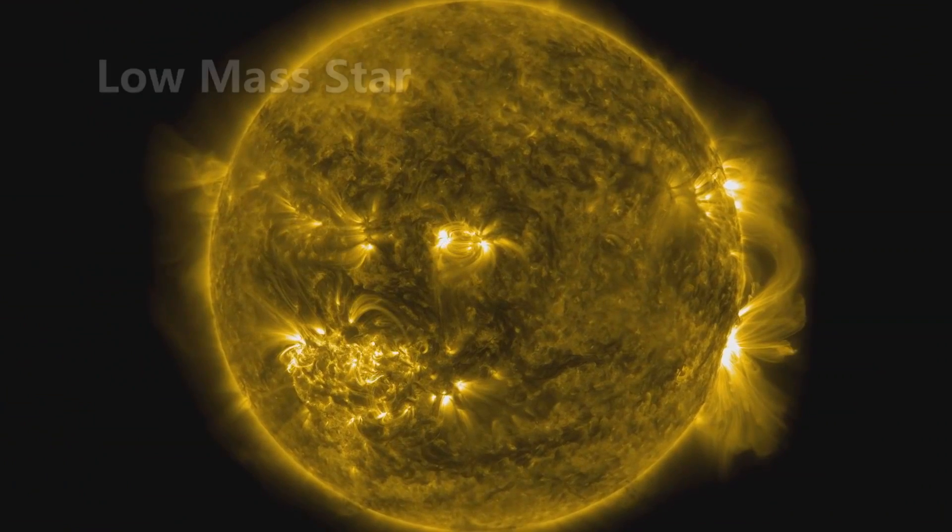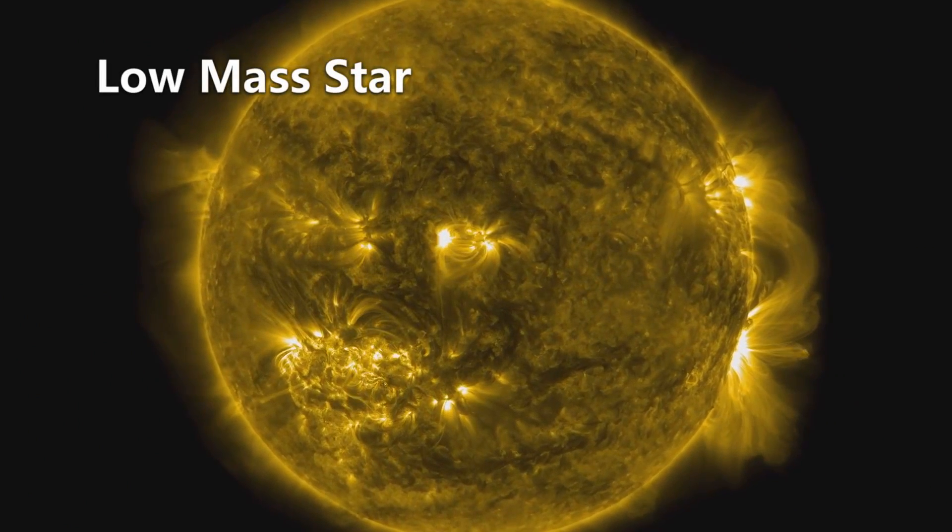So, our sun is a low mass star. And it's actually going to go through a really long evolution. It's going to be in the phase that it's currently in, where it's just fusing hydrogen into helium for about ten billion years. And then once it runs out of fuel in its center, it's going to evolve into a red giant star.